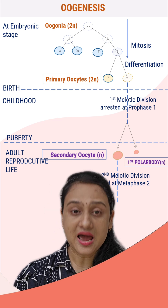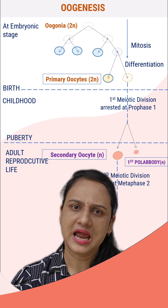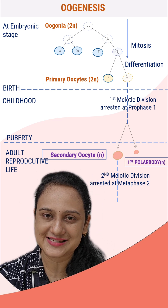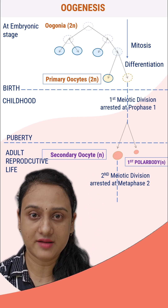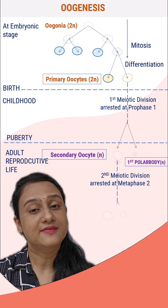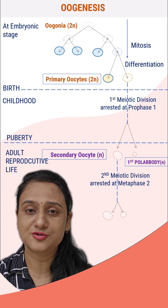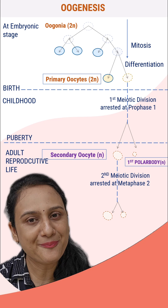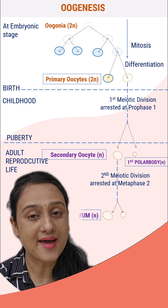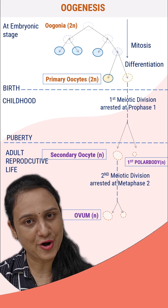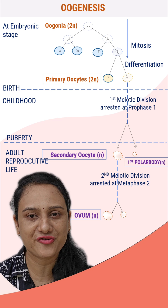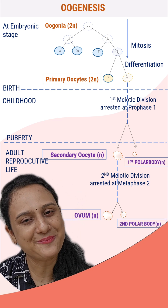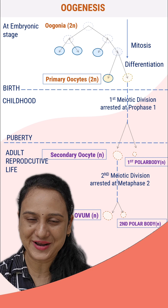Meiosis 2 of the secondary oocyte resumes only if entry of sperm occurs, meaning during the process of fertilization. If sperm entry occurs, meiosis 2 resumes to form again two unequal haploid daughter cells: one big ovum, haploid in nature with 23 chromosomes, and another small second polar body, which is also haploid in nature.